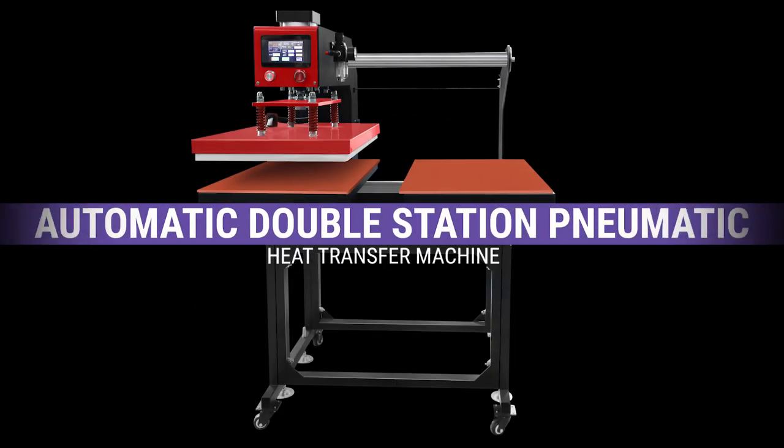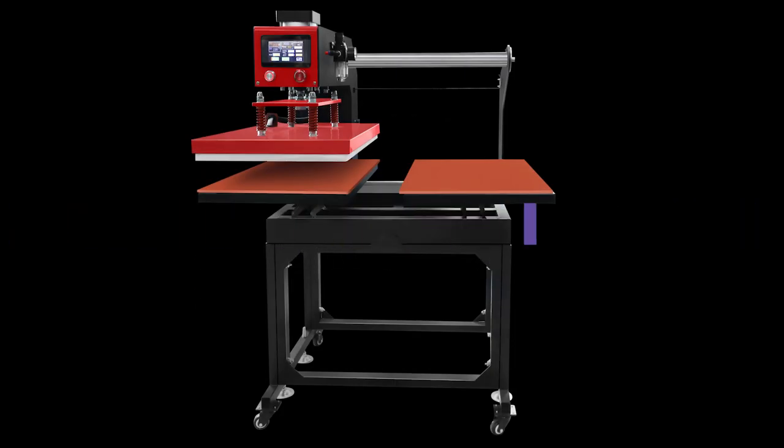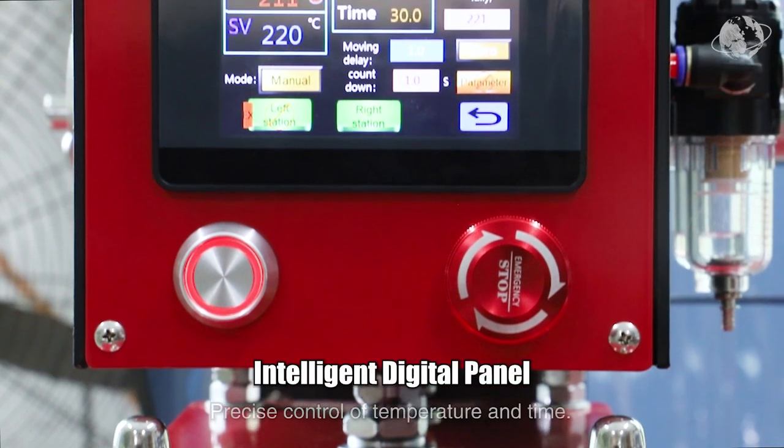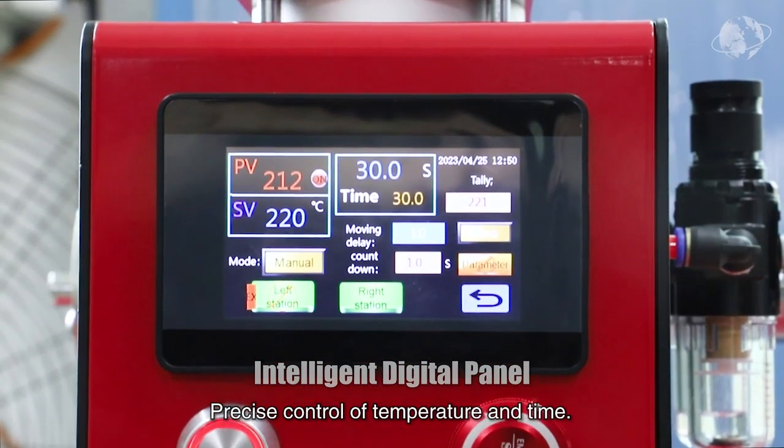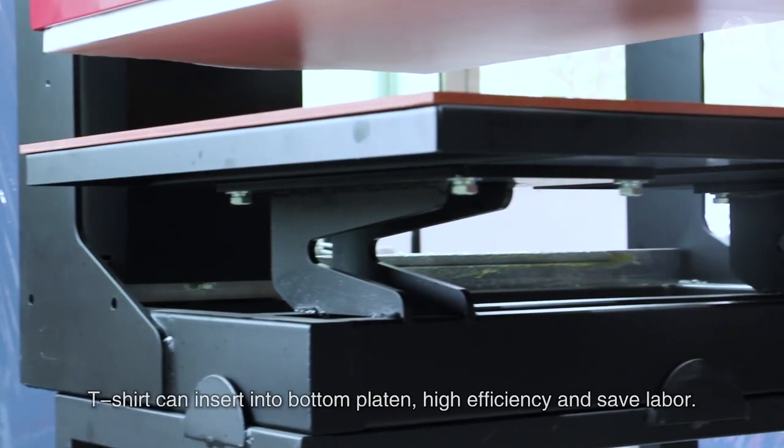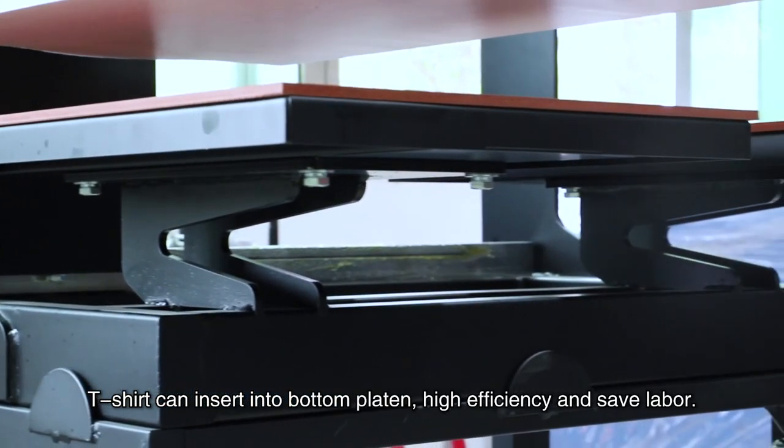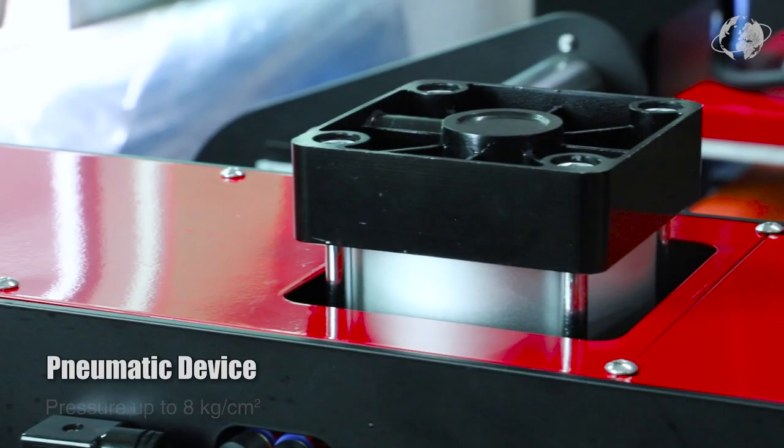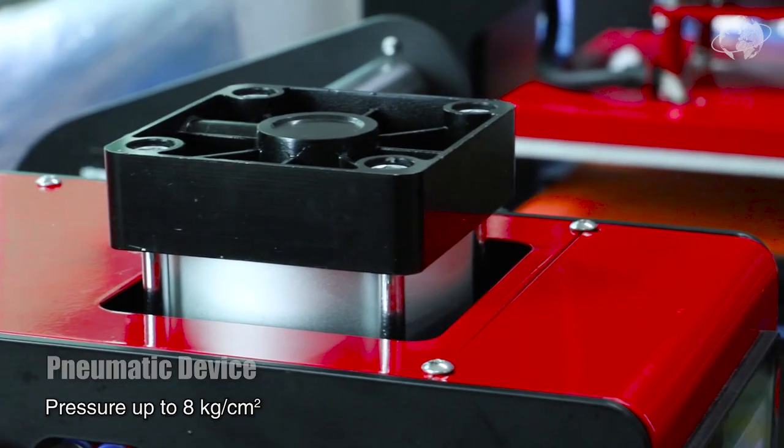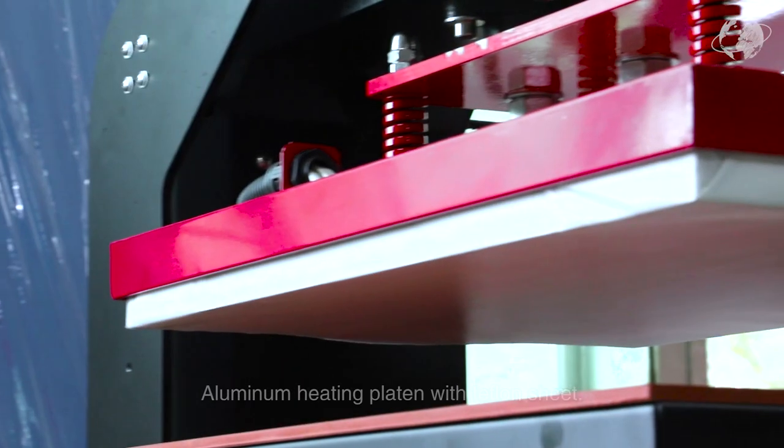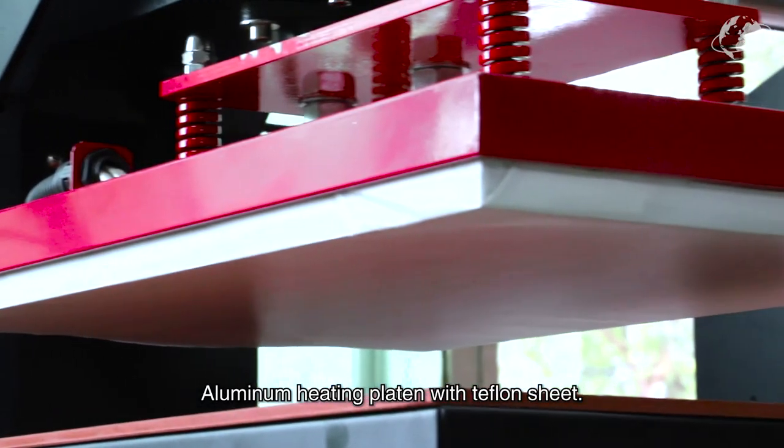Automatic double station pneumatic heat transfer machine with intelligent digital panel for precise control of temperature and time. T-shirts can insert into the bottom platen for high efficiency and labor savings. The pneumatic device delivers pressure up to 8 kilograms per square centimeter, with an aluminum heating platen and Teflon sheet.